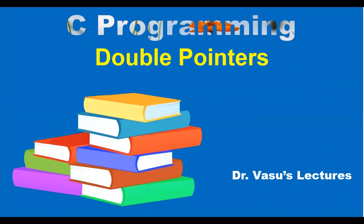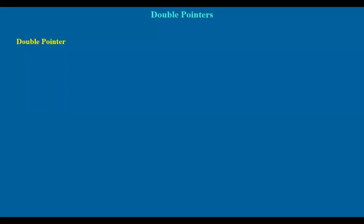Now, let's see what these double pointers are. A double pointer is a pointer to pointer. The pointer gives you the address of some variable. This pointer gives the address of that particular pointer — it stores the address.